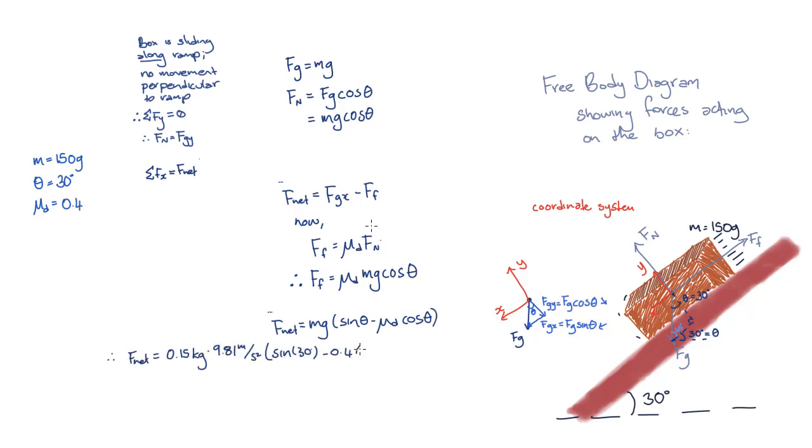If we plug in the values from our question, we find that this gives us a net force downwards along the ramp of 0.226 newtons.